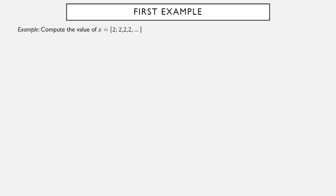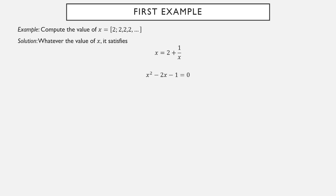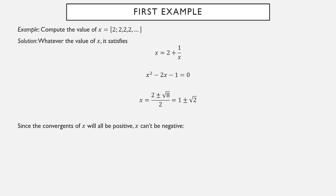Example 1: the continued fraction where every partial quotient is 2, i.e., x = [2; 2, 2, 2, ...]. Whatever x is, it satisfies x = 2 + 1/x. Solving: x² − 2x − 1 = 0, so by the quadratic formula x = 1 ± √2. Since all convergents are positive, x cannot be negative, so x = 1 + √2.